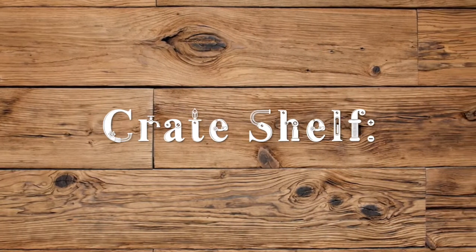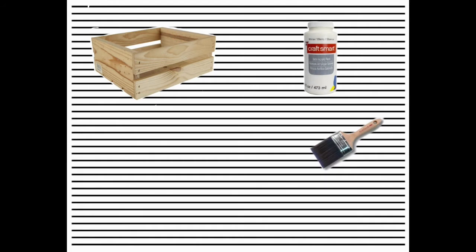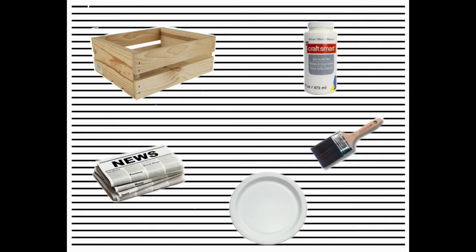Alright guys, for our first DIY we'll be making our very own crate shelf. What you'll need for this project is a wooden crate, satin acrylic paint, a 2 inch paintbrush, a paper plate, some newspaper, and a jar of water.